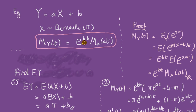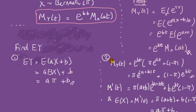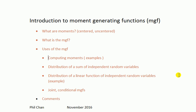This MGF of Y relates to the MGF of X through that expression. We want the derivative of the MGF of Y, which is a function of t, whereas the Bernoulli MGF in that expression is a function of at. So once we've written out the MGF of Y as a function of t, we differentiate with respect to t. Hopefully that will get you through the exam.